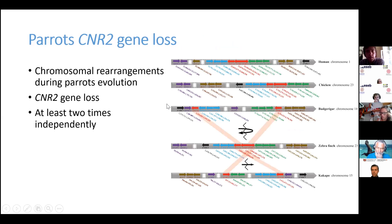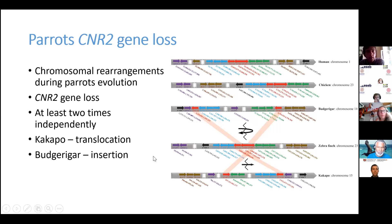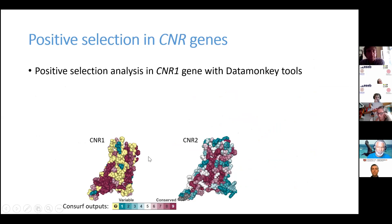This event happened at least two times independently. When we compare the gene orders of genes nearby the CNR2 locus in human, zebra finch, or chicken, we see similar patterns, but in parrots — for example in kakapo we may see some translocation patterns, and in budgerigar some insertion patterns — and the breakpoint is always at the locus of the CNR2 gene.